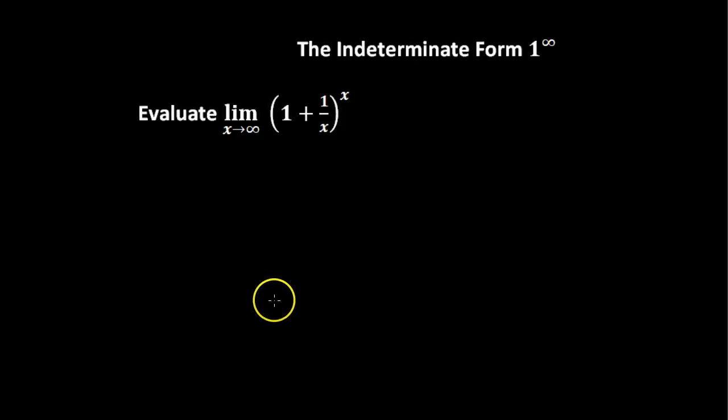In this video, we'll walk through an example of the indeterminate form 1 to the infinity. If we have the limit of 1 plus 1 over x raised to the power of x, and we were to take that as x approaches infinity, and then use direct substitution...